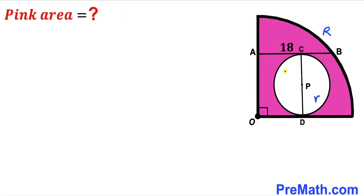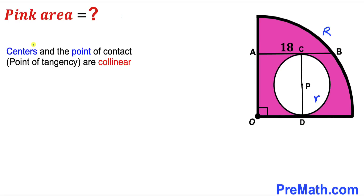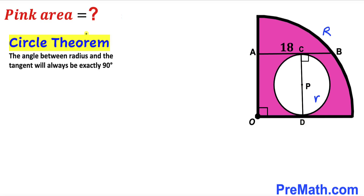I have connected the two points of tangency C and D, as you can see. Now let's recall this crucial fact: centers and the point of tangency are collinear, so the points of tangency C and D and center P all lie on the very same line.